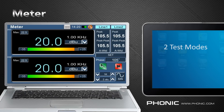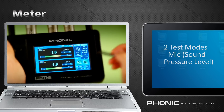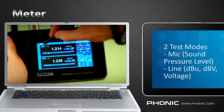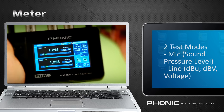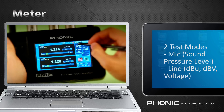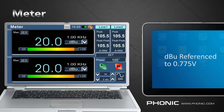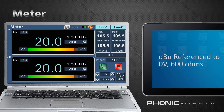The fifth function is meter, which has two primary test modes. The first is through microphone, which lets you measure sound pressure level, and the second is line input, which lets you measure DBU, DBV or voltage. DBU is commonly used for professional applications and is referenced to 0.775 volts, while DBV is commonly used for consumer applications and is referenced to 1 volt, 600 ohms.